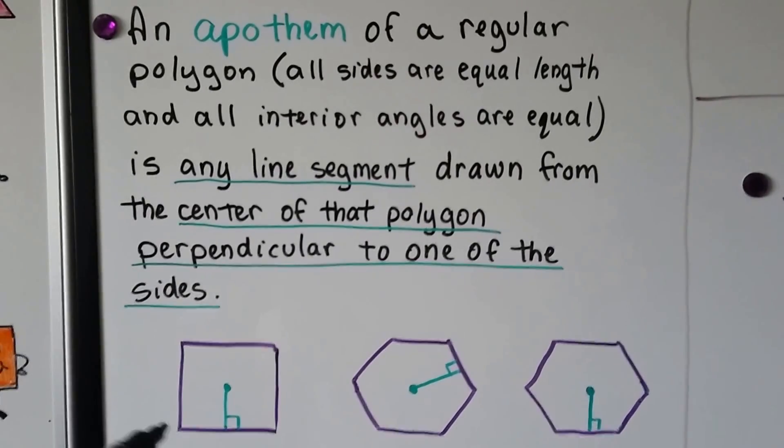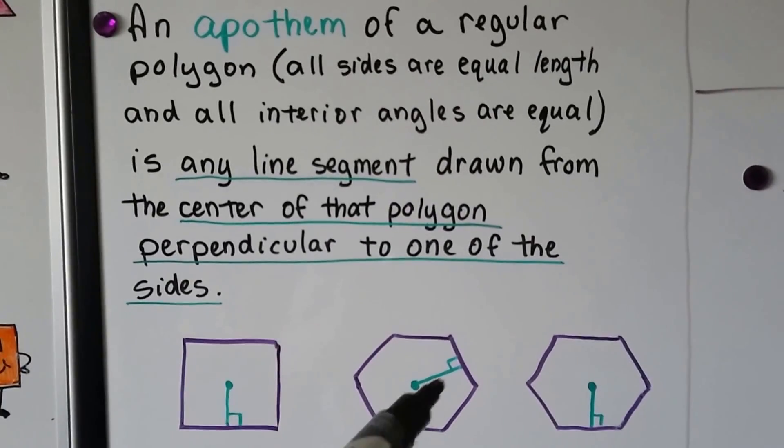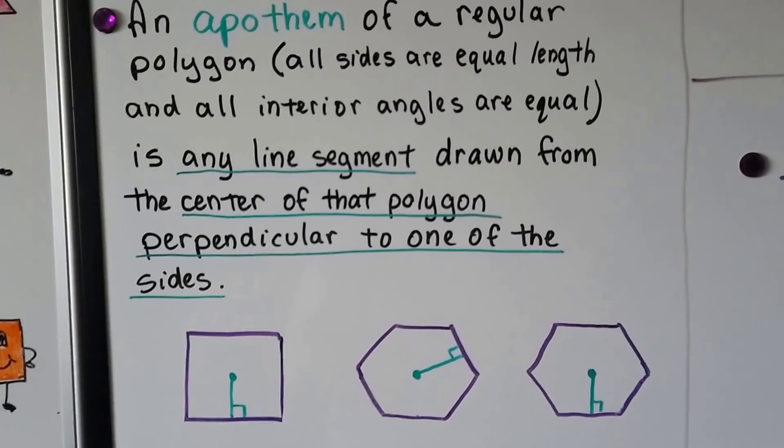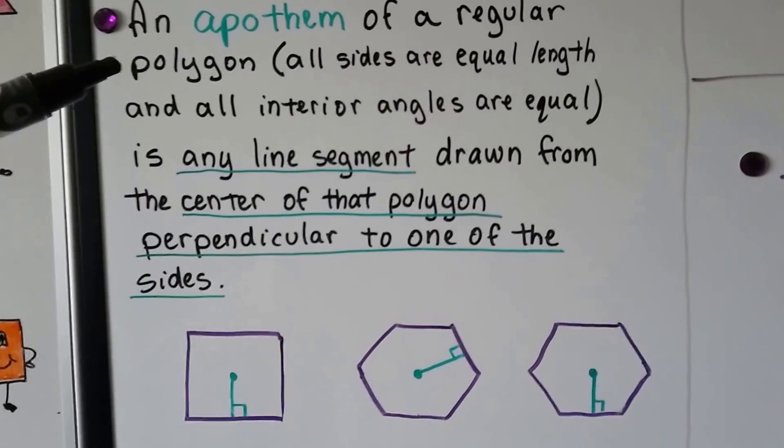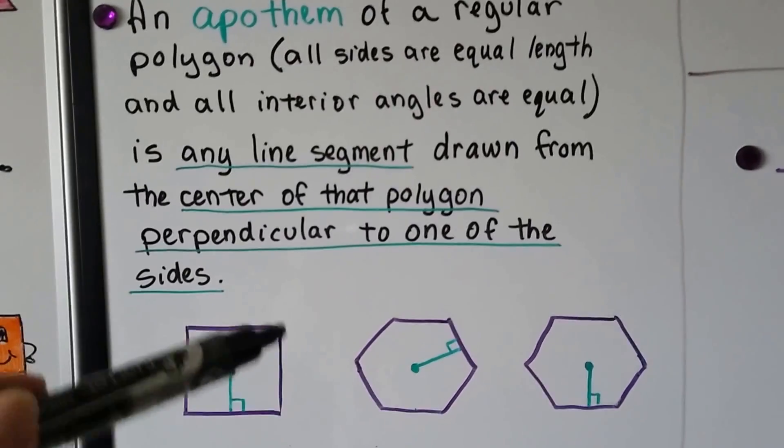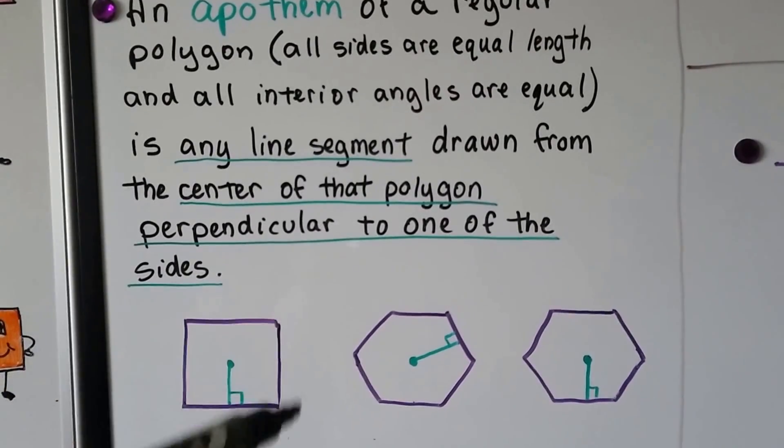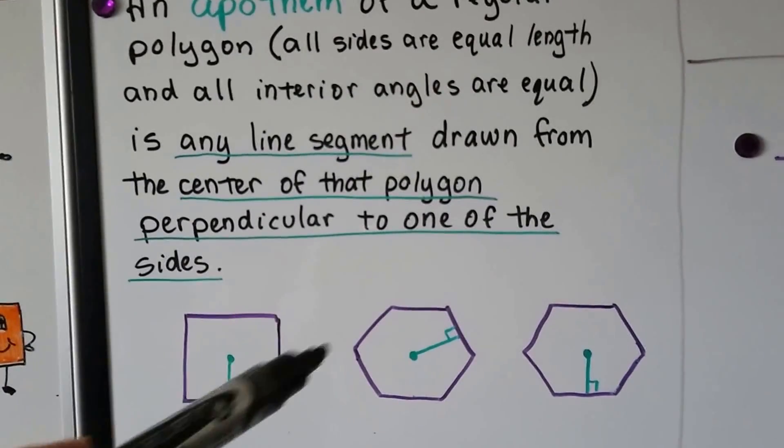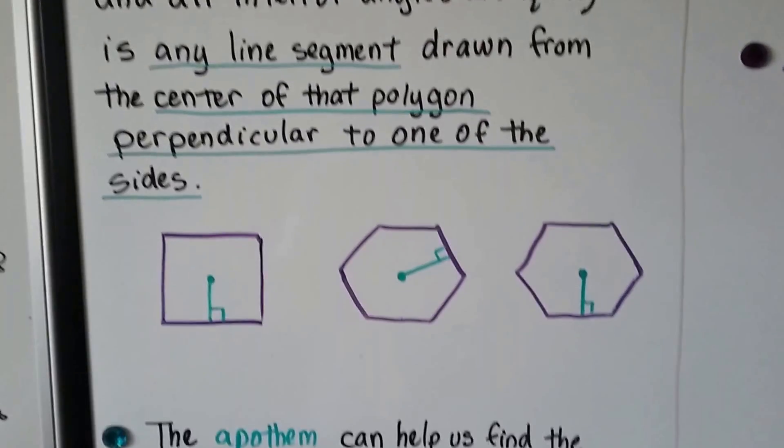It's going to a flat side, making a 90 degree angle. See, goes to a flat side. Just remember that a regular polygon has all its sides congruent, they're all equal, and all the interior angles are equal to each other.